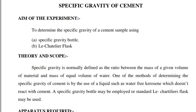Theory and scope: Specific gravity is normally defined as the ratio between the mass of a given volume of a material and the mass of an equal volume of water. One of the methods of determining the specific gravity of cement is by the use of a liquid such as water-free kerosene, which doesn't react with cement. A specific gravity bottle or a standard Le Chatelier flask may be used.